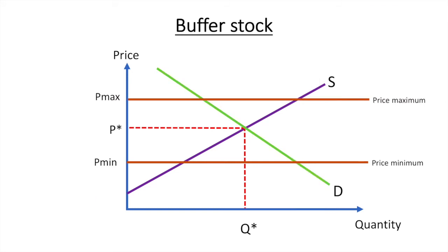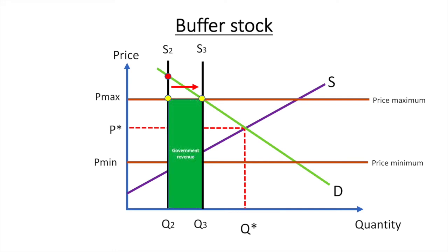Suppose that happens in the following year and supply is limited to S2 with corresponding quantity Q2. The market price then rises higher than the price maximum as indicated by the red circle. The government then releases a quantity of tomatoes equivalent to the quantity Q2 to Q3, thus increasing market supply to S3 and quantity Q3 which brings that market price back to the maximum price and also raises revenue for the government.